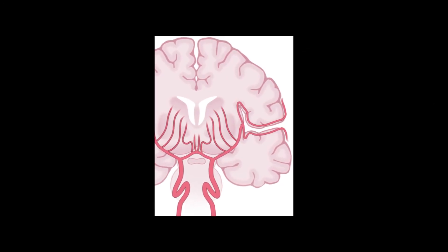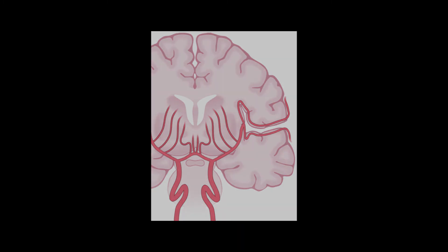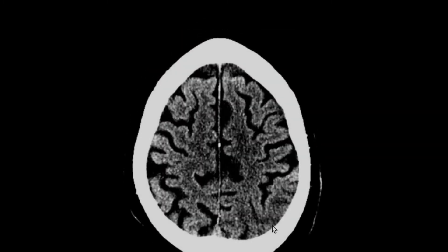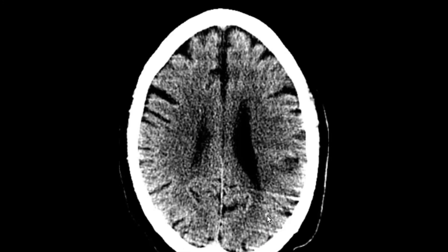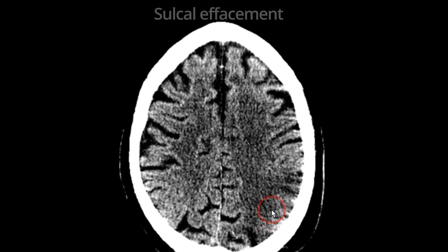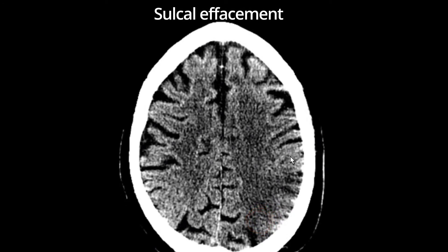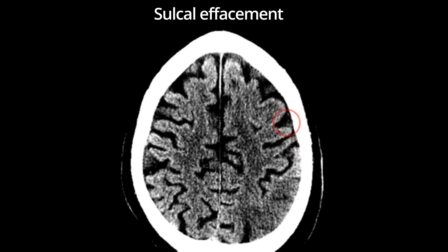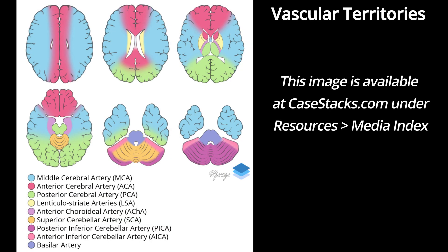If the embolus or thrombus is more distal in the MCA, then the basal ganglia and insular cortex may be spared, and the only signs of ischemia may be loss of gray-white matter differentiation in the cortex and sulcal effacement. In this case, for example, there is loss of gray-white matter differentiation in the high left posterior parietal lobe. Also note there is some mass effect with sulcal effacement. Sulcal effacement is caused by the swelling of gray matter from cytotoxic edema. Findings of ischemia in other vascular territories are very similar, with sulcal effacement and loss of gray-white differentiation.